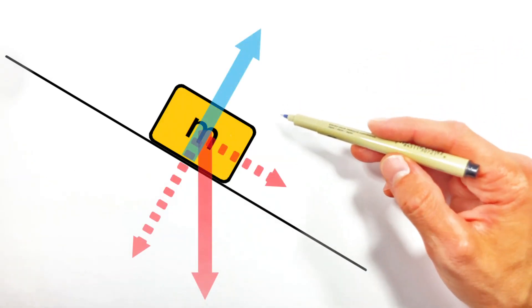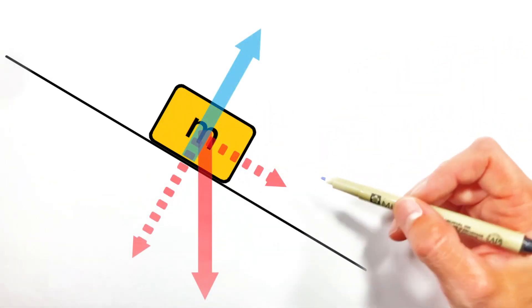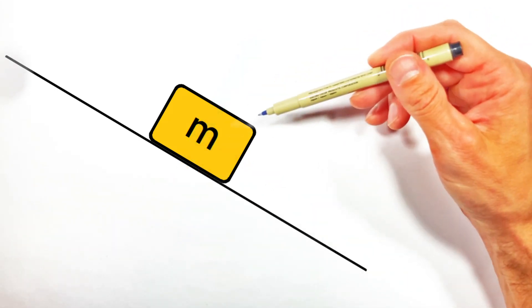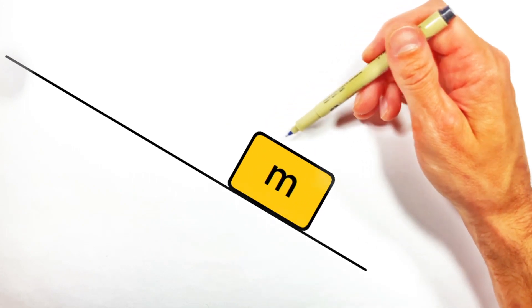All right, today I want to walk you through all the forces which are acting on an object like this block when it's placed on a hill. And more importantly, I want to get at why an object like this block has a tendency to slide downhill.